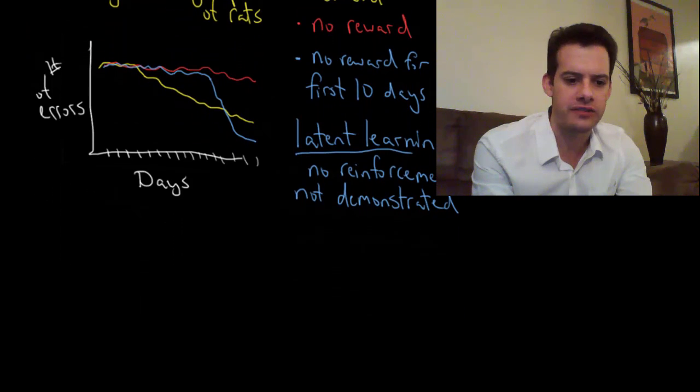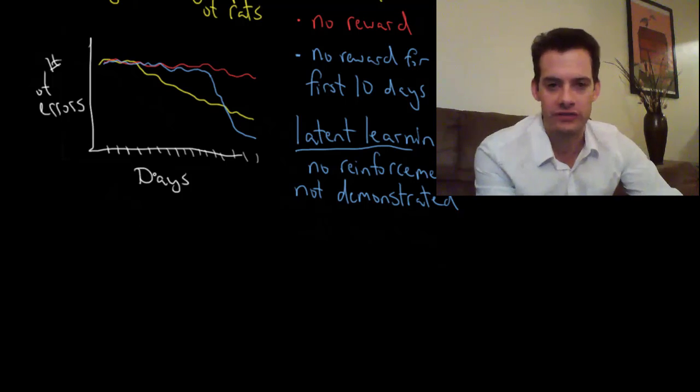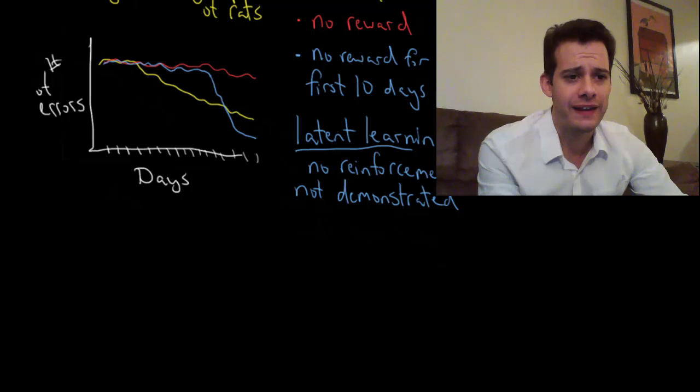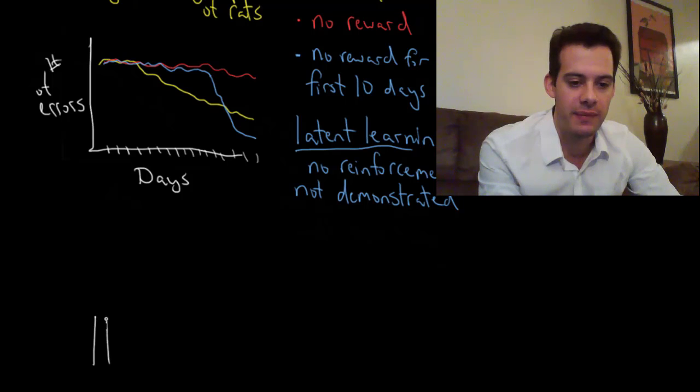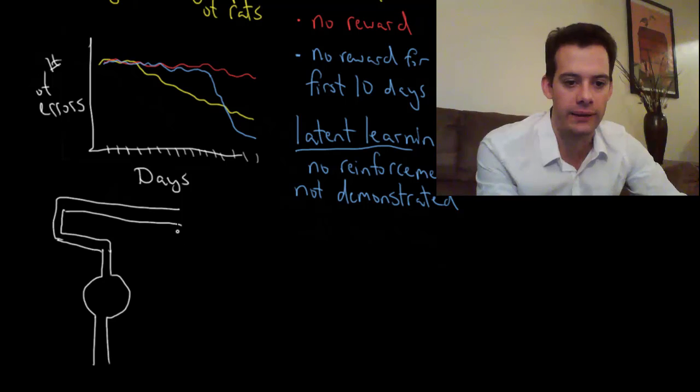I want to look at one other study by Tolman conducted with Ritchie and Kalish in 1946. What they did in this study was they had a very simple maze that they put some rats in. The maze had an entry point into this round room and then there was one exit. Then the corridor turned left, then right, then right again, and at the end of this long hallway was the food reward.